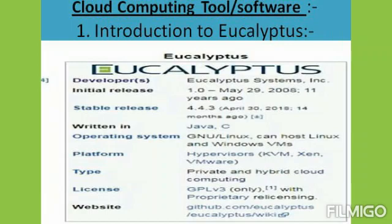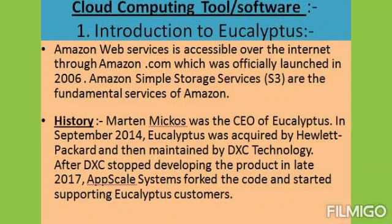Eucalyptus software features include: first, support for both Linux and Windows virtual machines; second, application program interface compatible with the Amazon EC2 platform; third, compatible with Amazon Web Services and Simple Storage Service; fourth, works with multiple hypervisors including VMware, Xen, and KVM.